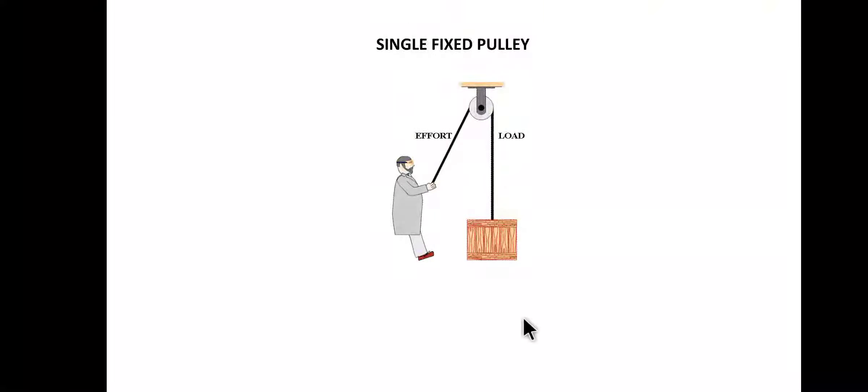Let's first discuss about the single fixed pulley. Here is a picture which shows how a single fixed pulley works. A load is attached at one end of the rope which is passed through the pulley, and from the other end the effort is applied. A single fixed pulley is fixed at a rigid support, and its axis of rotation is fixed.